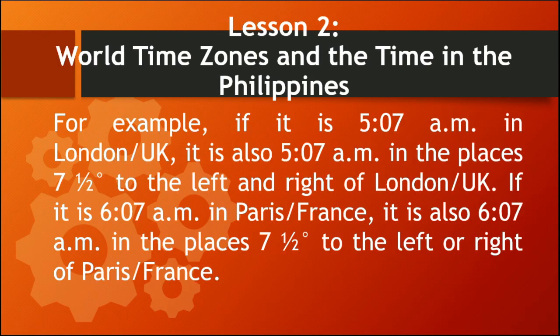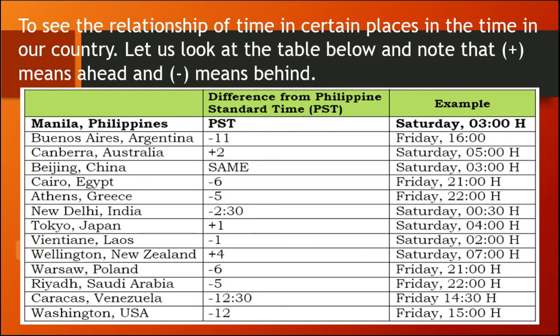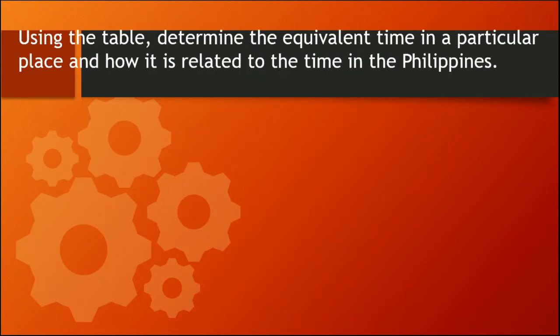If it is 6:07 AM in Paris, France, it is also 6:07 AM in the places 7.5 degrees to the left or right of Paris. To see the relationship of time in certain places to the time in our country, let us look at the table and note that a plus sign means ahead and a minus sign means behind. Using the table, determine the equivalent time in a particular place and how it is related to the time in the Philippines.